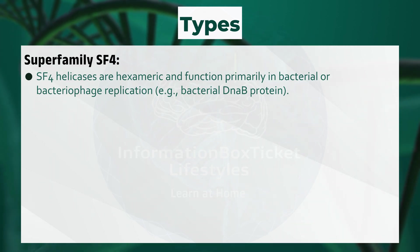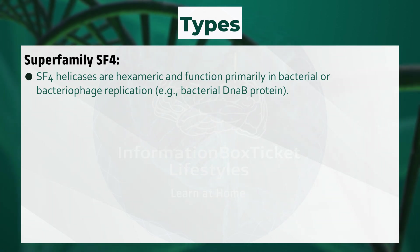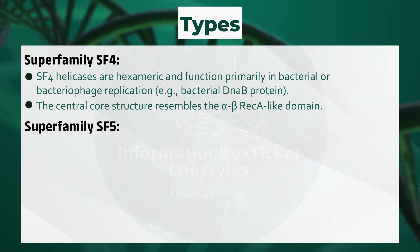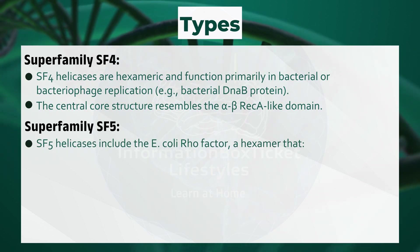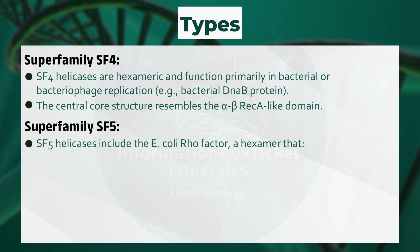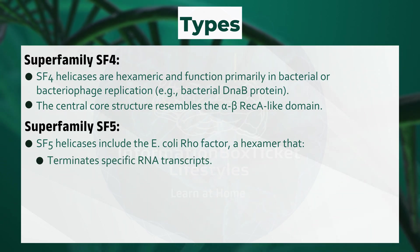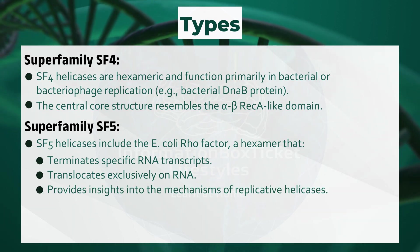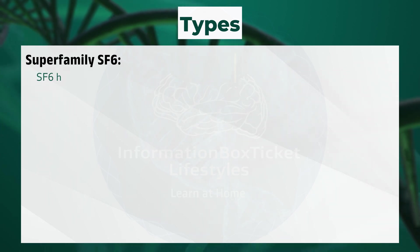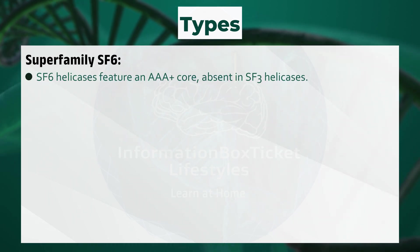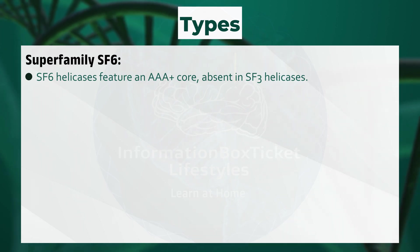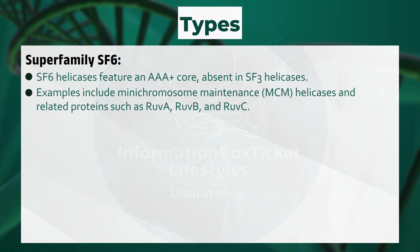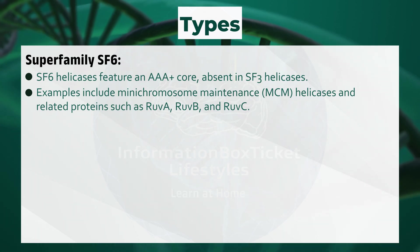Superfamily SF4: SF4 helicases are hexameric and function primarily in bacterial or bacteriophage replication, for example, the bacterial DnaB protein. The central core structure resembles the alpha-beta RecA-like domain. Superfamily SF5: SF5 helicases include the E. coli Rho factor, a hexamer that terminates specific RNA transcripts and translocates exclusively on RNA, providing insights into the mechanisms of replicative helicases. Superfamily SF6: SF6 helicases feature an AAA+ core absent in SF3 helicases. Examples include mini-chromosome maintenance (MCM) helicases and related proteins such as RuvA, RuvB, and RuvC.